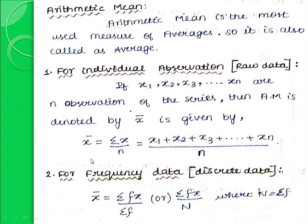This is the formula for finding mean: x-bar equals summation x, that is we add all the observations x1 plus x2 plus x3 plus etc. plus xn, divided by n. This is the formula for ungrouped data. Second method, for grouped data — frequency data, that means discrete data — the formula for finding arithmetic mean is x-bar equal to summation fx by summation f, or summation fx by capital N, where summation f is denoted as capital N.